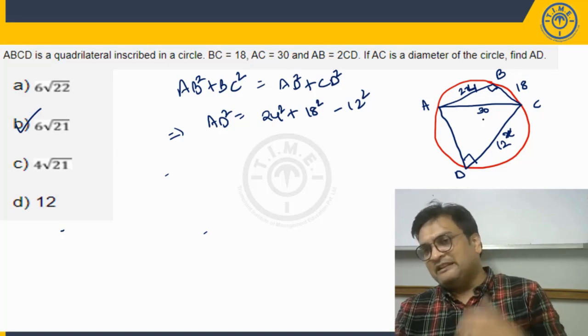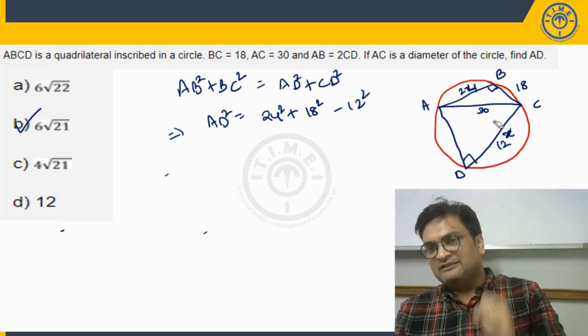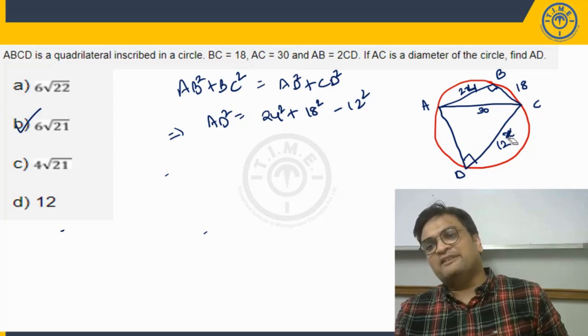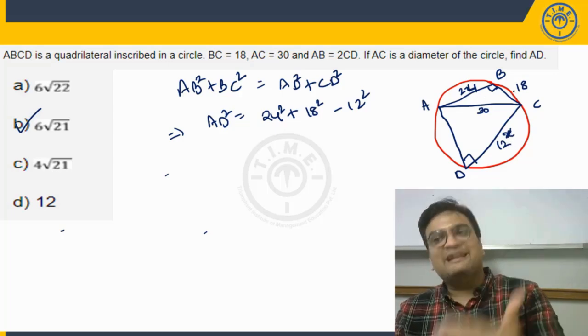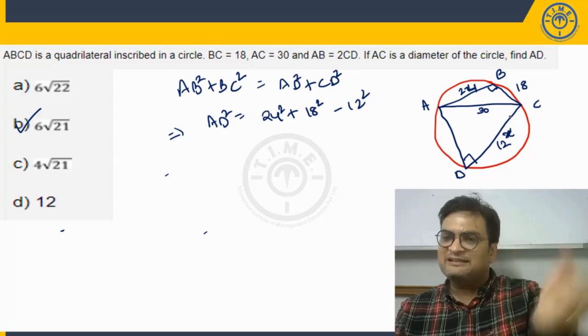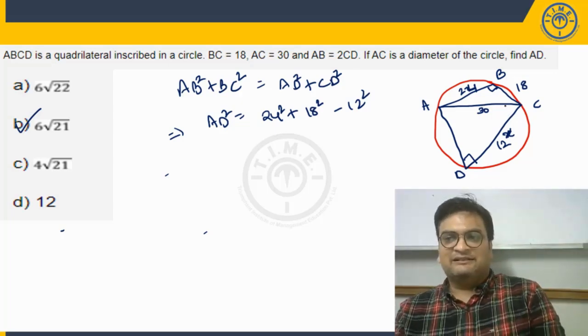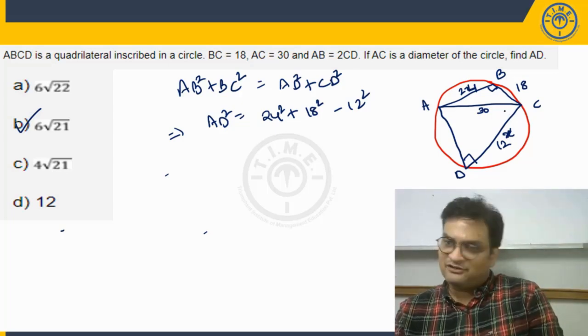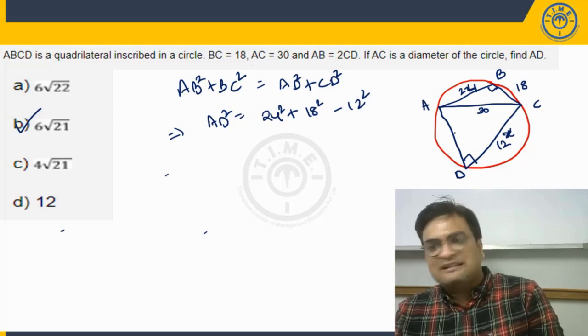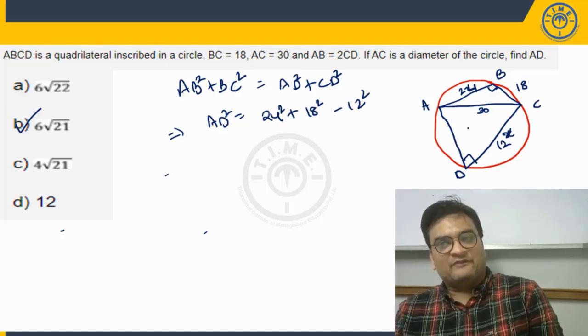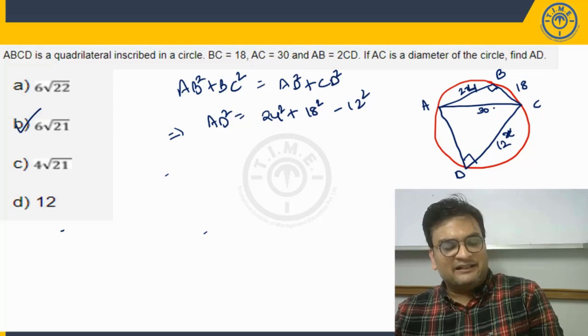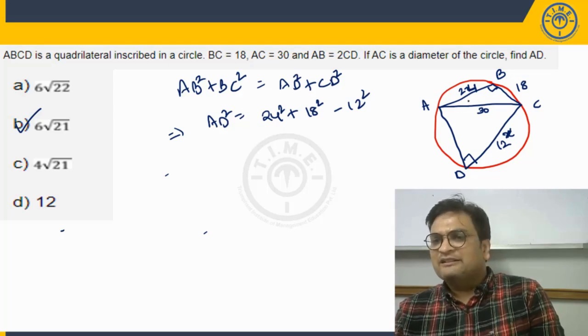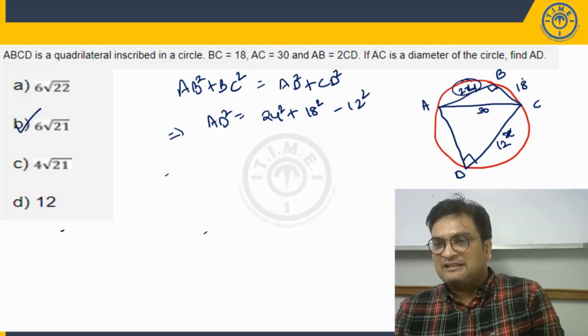imagine if in this particular quadrilateral, these lengths were given to us. This is 12, 24, 18 given to us, right. AC is the diameter here that is also given to us. Then he is asking us to find AD. AC is the diameter is given. And these side lengths are given. This is given, this is given, this is given. He is asking us to find this.